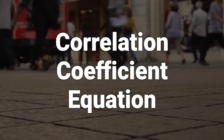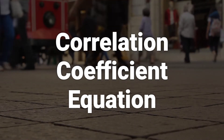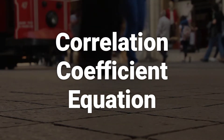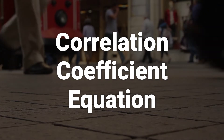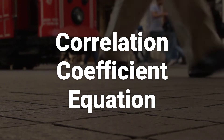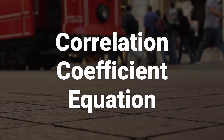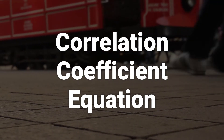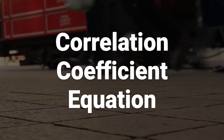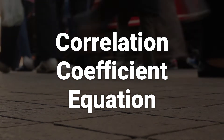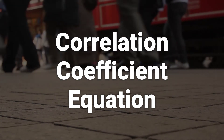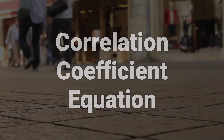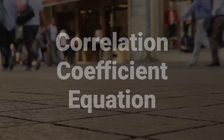The Pearson correlation is calculated by determining each variable's standard deviation as well as the covariance between them. The formula for the correlation coefficient, rho xy, can be calculated by dividing the covariance by the product of the two variables' standard deviations.